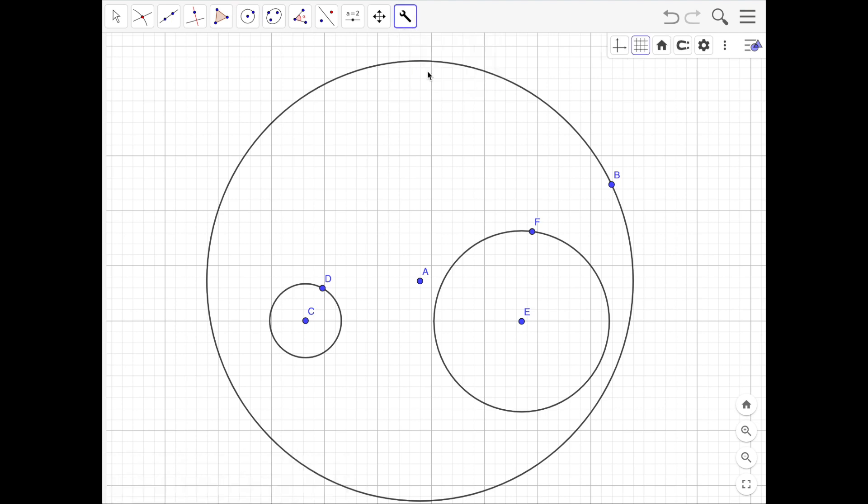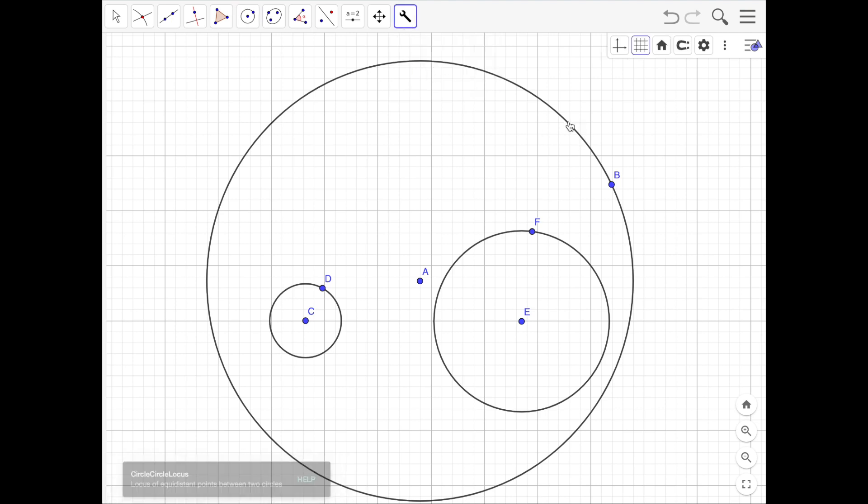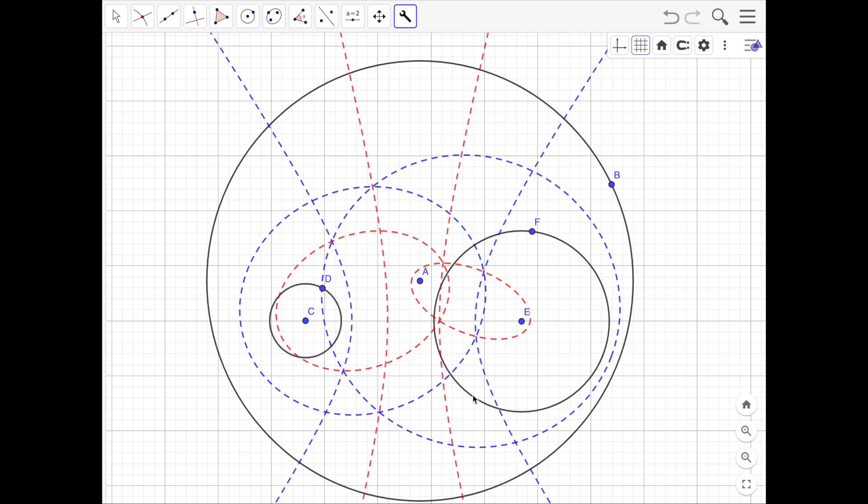So again, we use the circle circle locus tool. This time instead of hyperbolas, we get ellipses, because one circle is inside the other one. For this, it's also ellipses. And then for these two circles, they don't overlap, so these are hyperbolas.